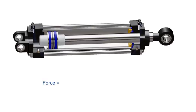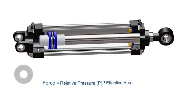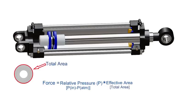The theoretical force of the actuator is the relative pressure on the piston multiplied by the effective area of the piston on which pressure is exerted. Here, the relative pressure is the pressure of the supplied air minus the atmospheric pressure. During the extension stroke, compressed air can exert pressure on the total cross-sectional area of the piston, giving us the theoretical force as relative pressure multiplied by total area of piston.